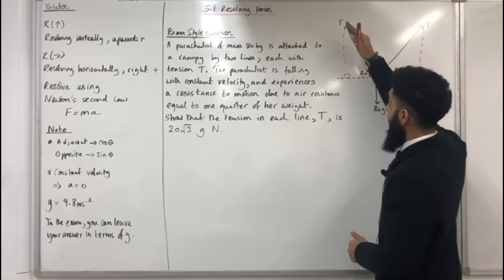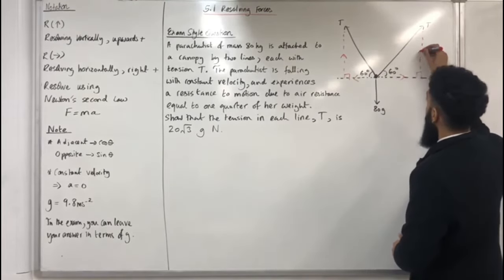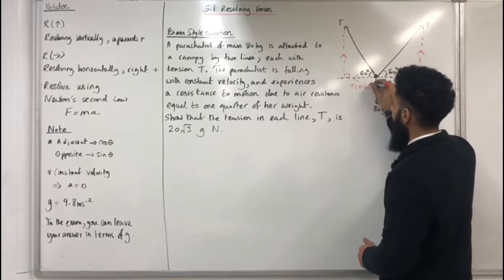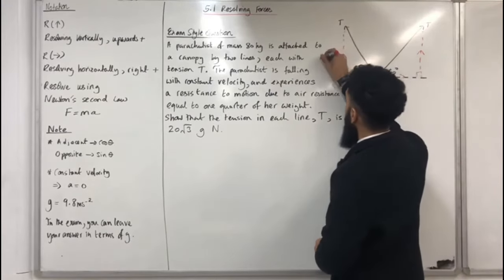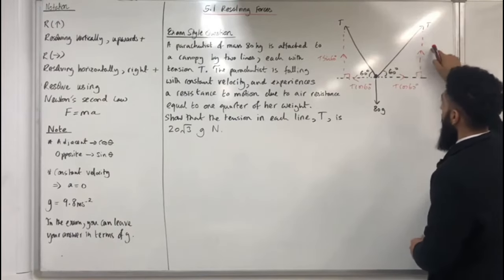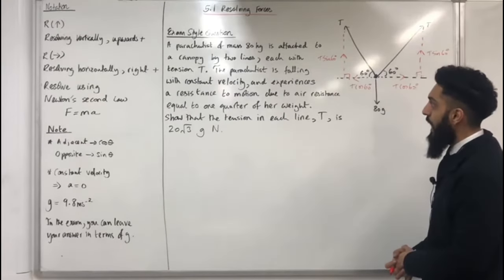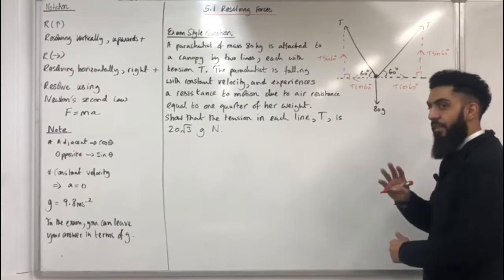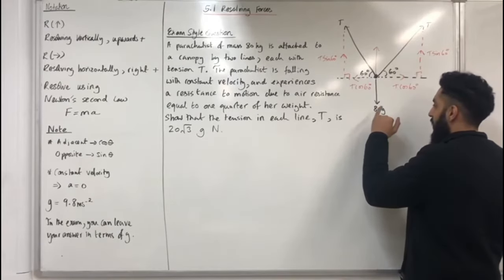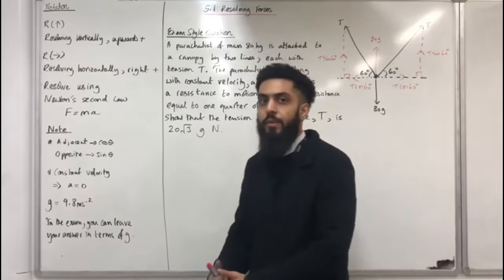The left tension T stretches up and to the left, and the right tension T stretches up and to the right. The horizontal component of each T Newton force is T cos 60 degrees, and the vertical component is T sin 60 degrees. The parachutist is falling downwards, so air resistance acts upwards. Air resistance equals one quarter of 80G, which is 20G acting upwards. The weight is 80G acting downwards. That is my complete force diagram for the parachutist.